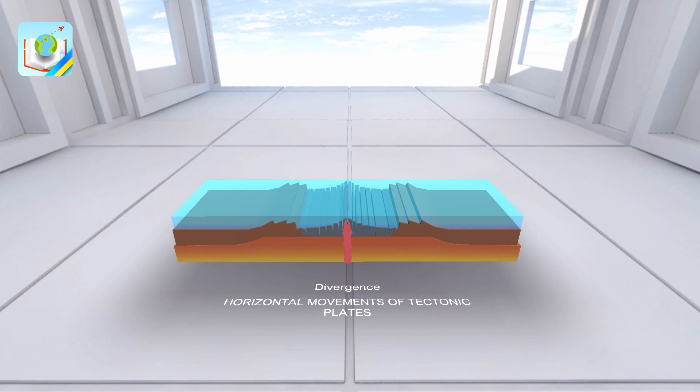Now you know that as a result of the horizontal movements of plate tectonics, the continents also move. As a result of these movements, the main landforms of the planet arise.